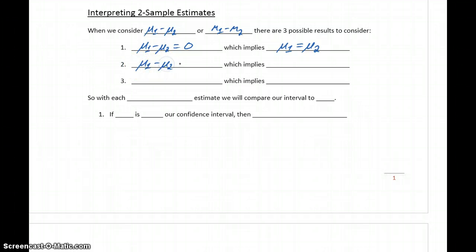If the difference between our two parameters is greater than zero, that means that the first parameter is larger than the second. And if the difference between our two parameters is something less than zero, that means that the first parameter is smaller.